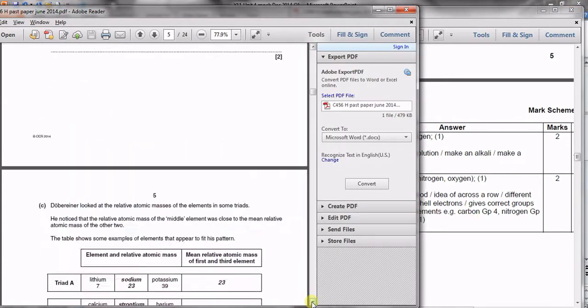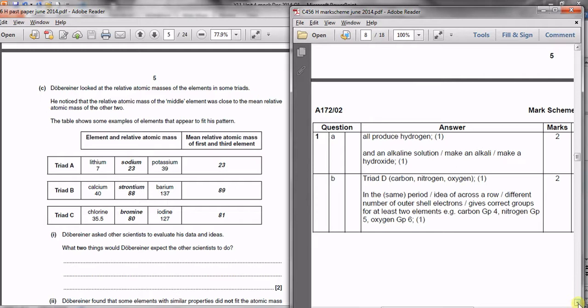And section C you're given information about three triads and it asks you about peer review basically. For C part one, what two things would Dobereiner expect other scientists to do?